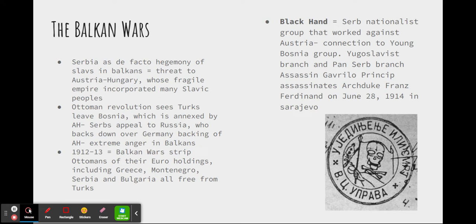Gavrilo Princip was one such assassin in the Black Hand, and he is who assassinated Archduke Franz Ferdinand of Austro-Hungary on June 28, 1914, in Sarajevo, Bosnia. This is seen as the flashpoint that caused World War I. While there were many background events, no single event caused such an immediate burst of anger and bloodshed in Europe as the assassination of the Archduke.